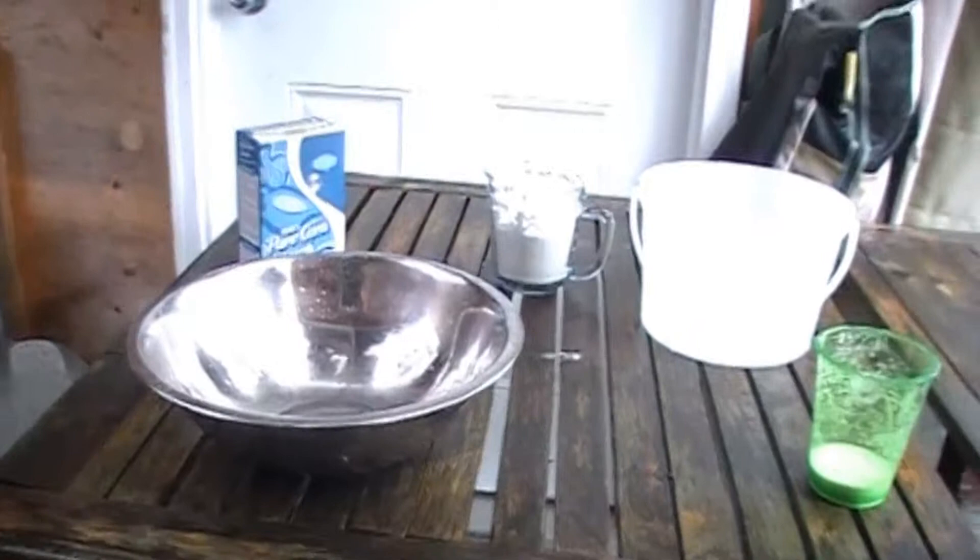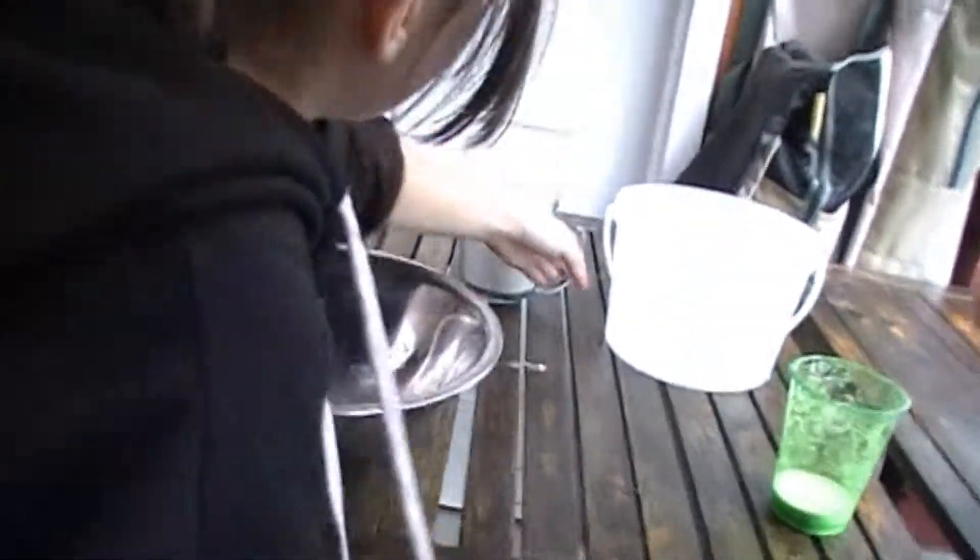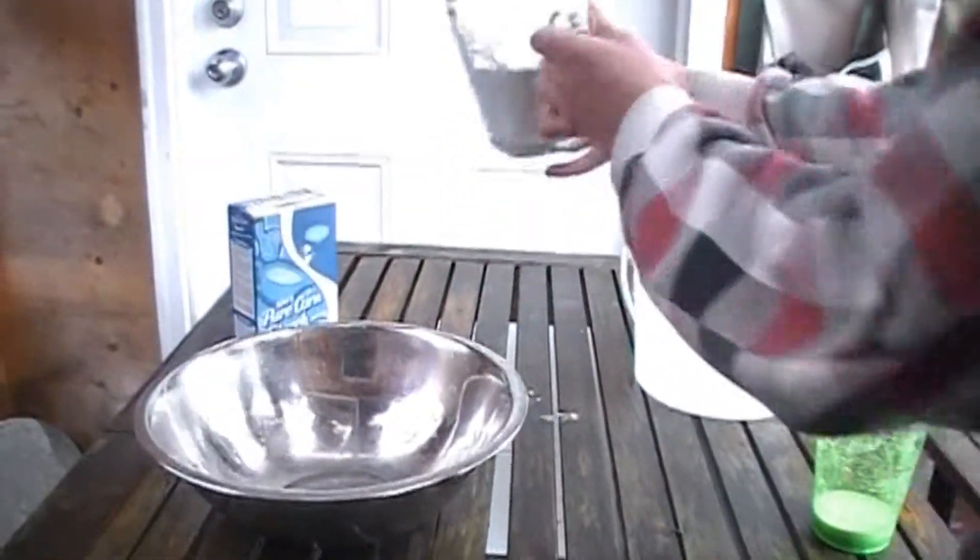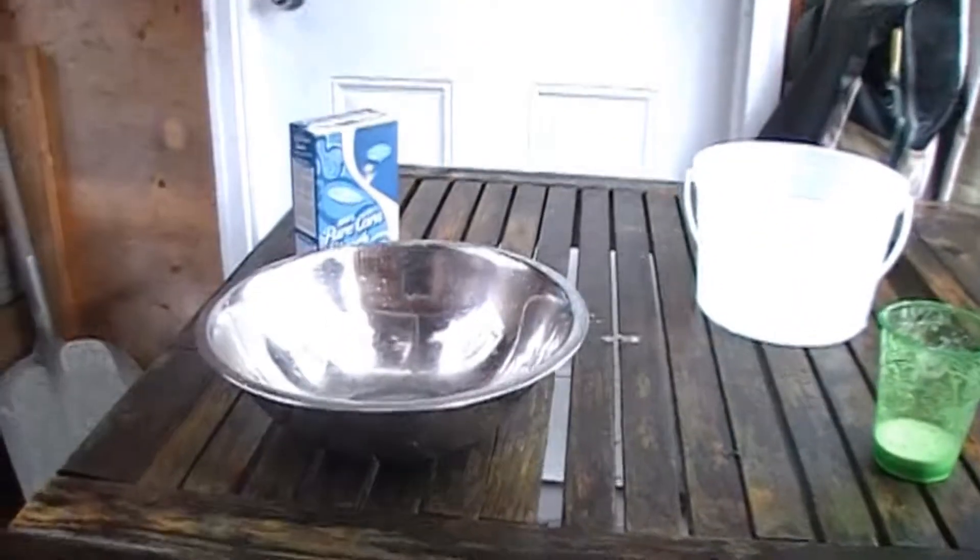So we're just going to pour in the cornstarch. We have 250 milliliters, about, pour it in the bowl.